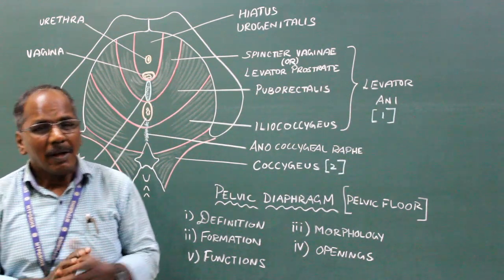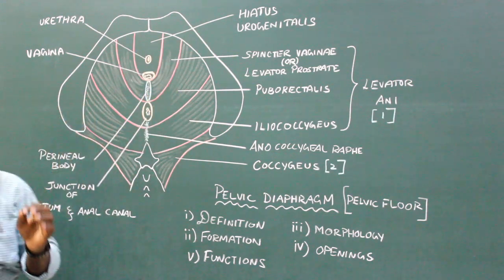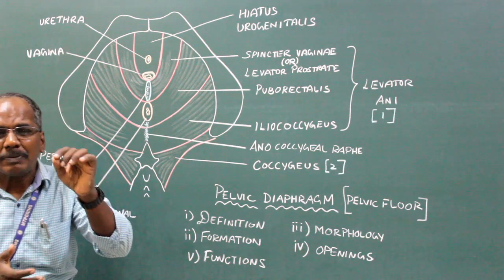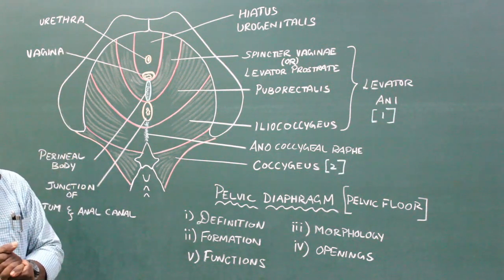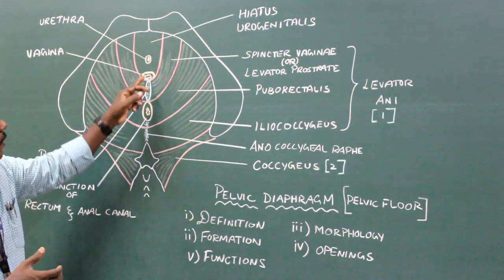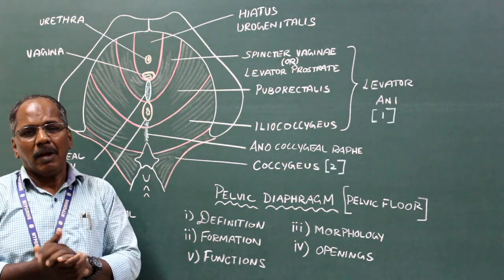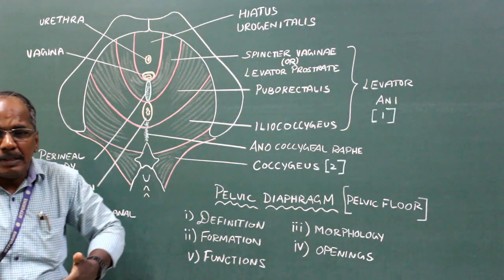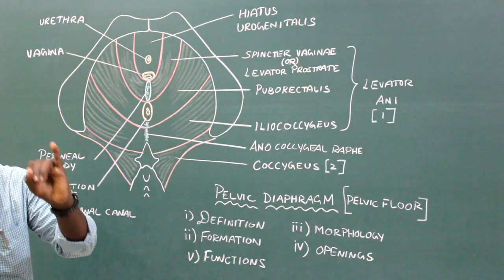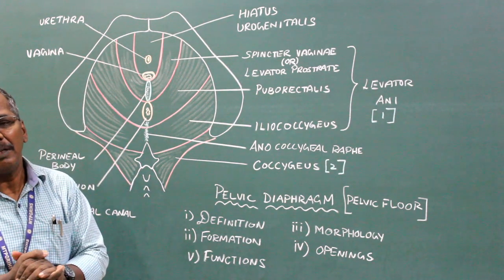Functions: the pelvic diaphragm provides support for the pelvic viscera, that is the organs present in the true pelvis. It has a sphincteric action on the vagina and rectum. It also assists in increasing the intra-abdominal pressure during defecation, micturition, and parturition, that is during delivery.